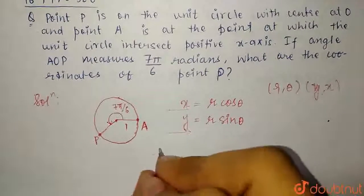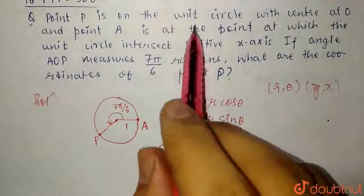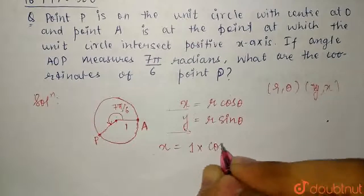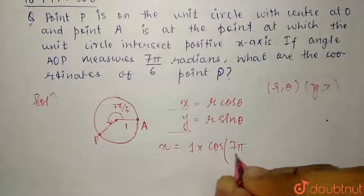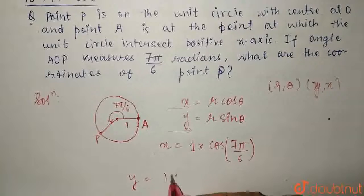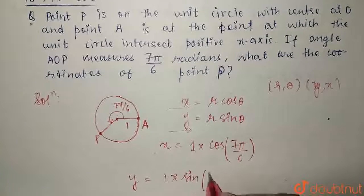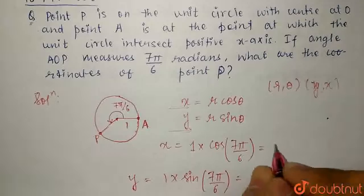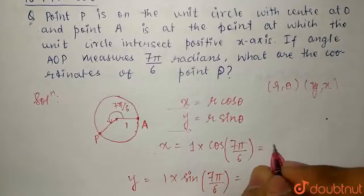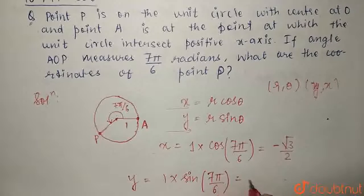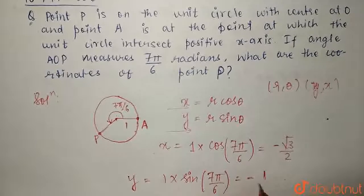X would come out to be R is given as 1 because it is a unit circle. So, 1 times cos theta is 7 pi by 6. And Y is 1 times sin theta is 7 pi by 6. After solving them, X comes out to be minus root 3 by 2 and Y comes out to be minus 1 by 2.